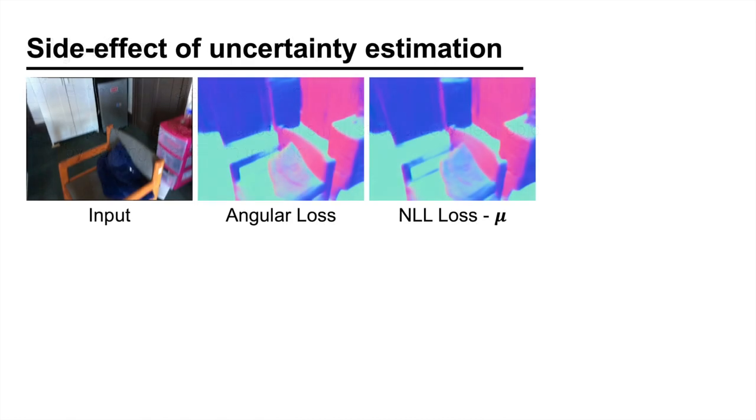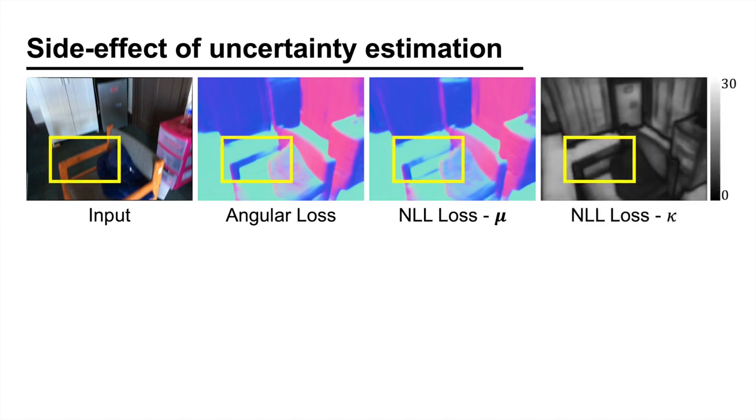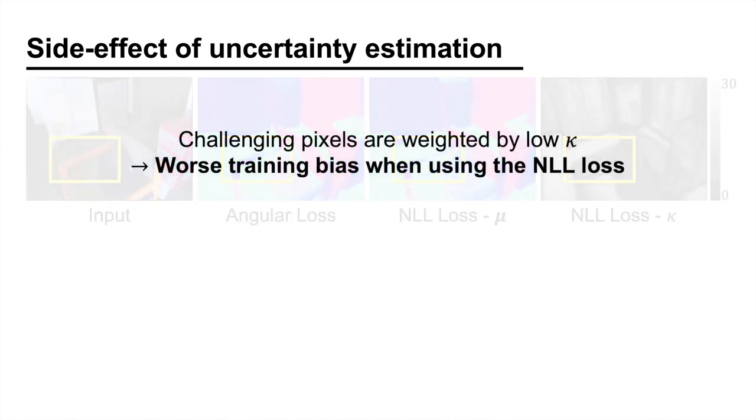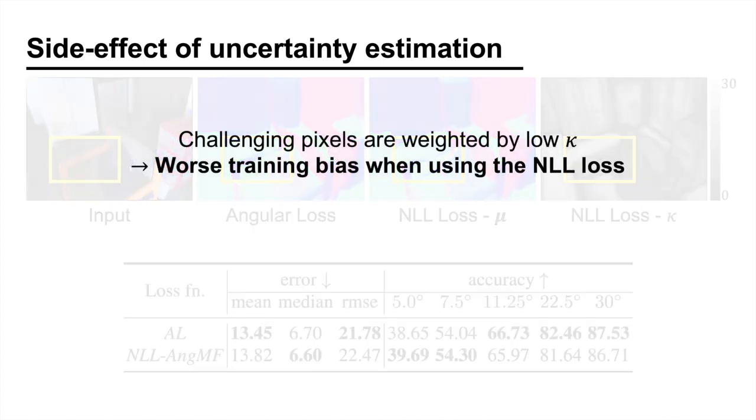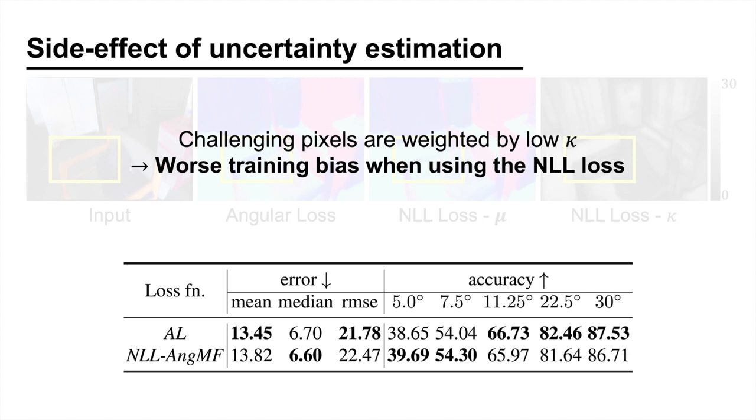In fact, we could observe that training the network using the NLL loss often leads to worse performance on small structures. This is because our loss is weighted by the concentration parameter kappa. Since kappa is low for the challenging pixels, the bias in training becomes worse when we use the NLL loss. This table compares their quantitative performance. Since the network is not strongly penalized for making inaccurate predictions for the challenging pixels, the mean error and RMSE increase.